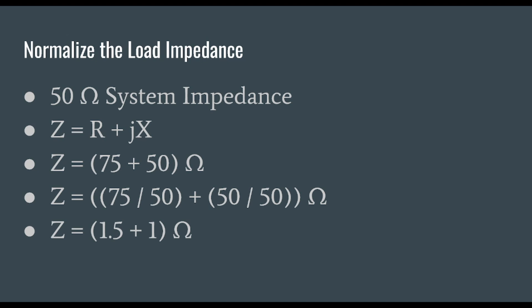It would be minus 50 if it was capacitive reactance but we're using inductive. What we need to do to normalize our system impedance is divide everything by 50. We divide 75 by 50 and then we divide 50 by 50 which is our system impedance. We end up with an overall normalized impedance of 1.5 plus 1.